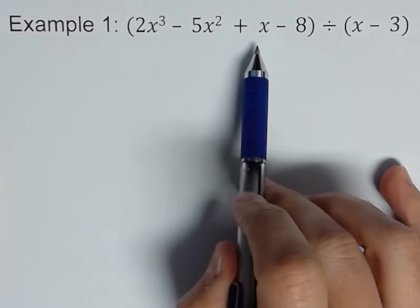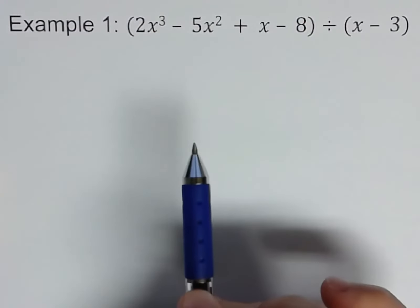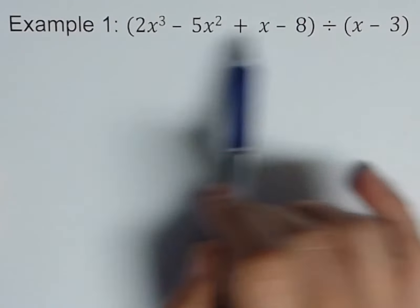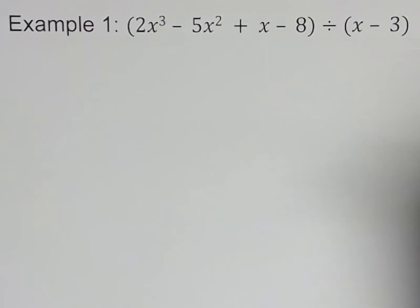This one already is, so we're in good shape. Also, if there's any powers missing, add a zero there as a placeholder. This one doesn't have anything missing, so we're okay, we don't need to worry about that.